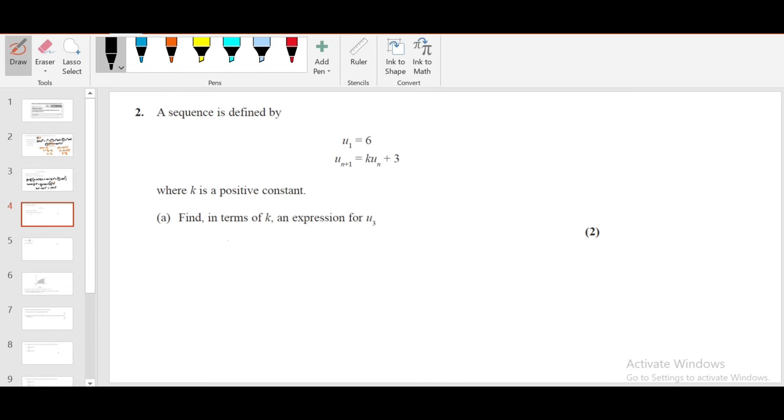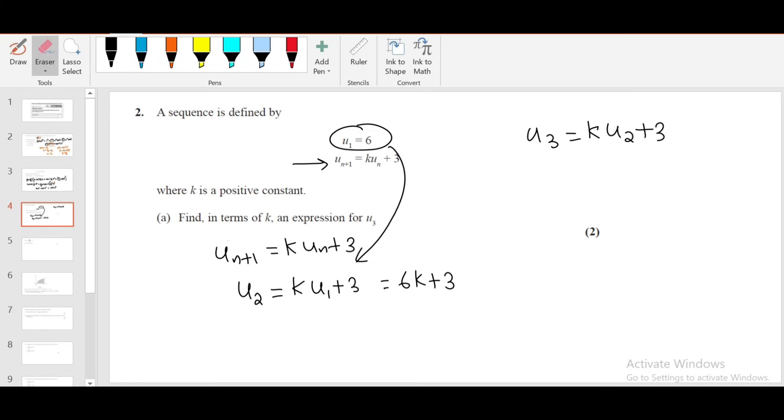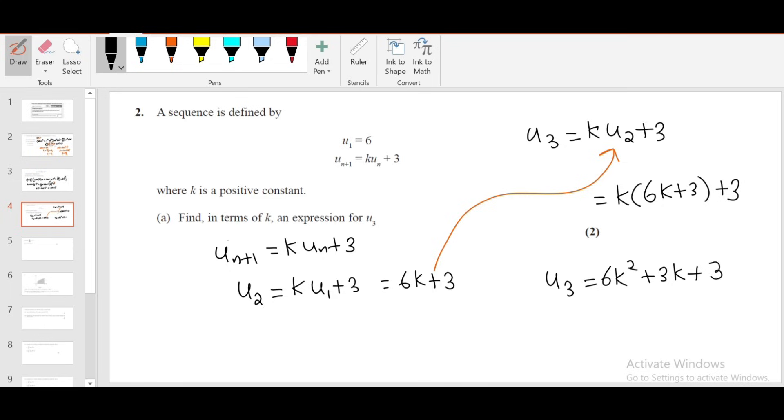Question number 2: A sequence is defined by u₁ = 6 and the recurrence relation u_{n+1} = ku_n + 3. They want u₃ in terms of k. u₂ = ku₁ + 3 = 6k + 3. u₃ = ku₂ + 3 = k(6k + 3) + 3 = 6k² + 3k + 3.